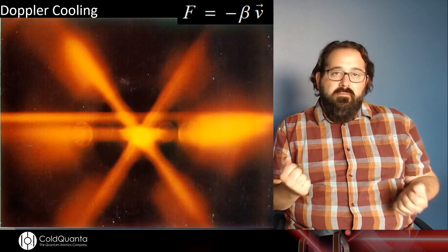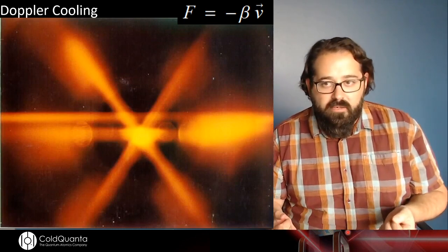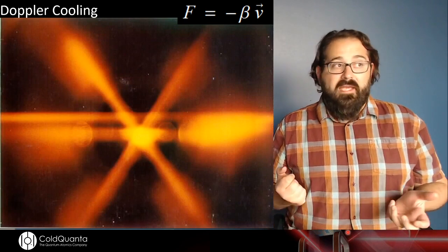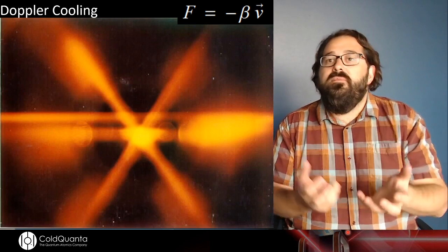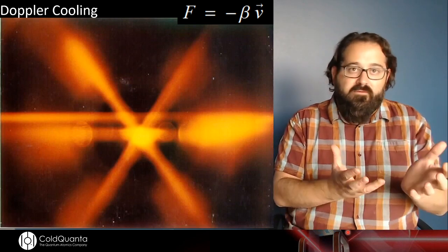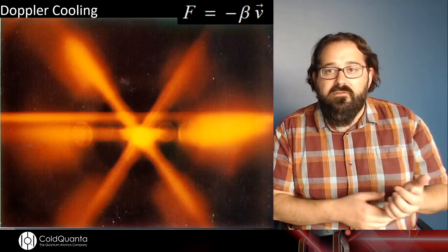And I can extend this into three dimensions because the atoms, when you shine light on them, scatter light in random directions. So let's add two more sets of laser beams, and from three dimensions I can now cool my atoms in all three dimensions. This makes the atoms cold, I can lower their temperature this way, but it doesn't actually trap the atom, and what I'd like to do is get the atoms, put them in a trap, and be able to do something useful with them.